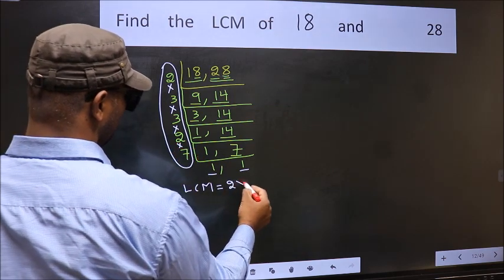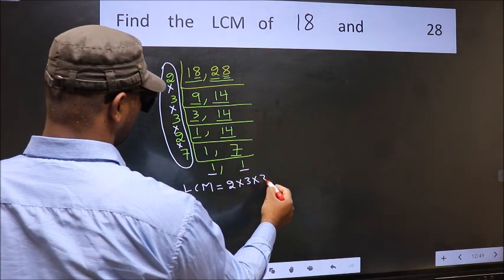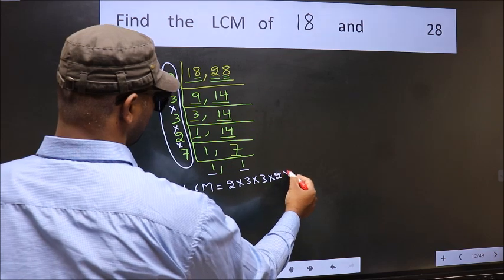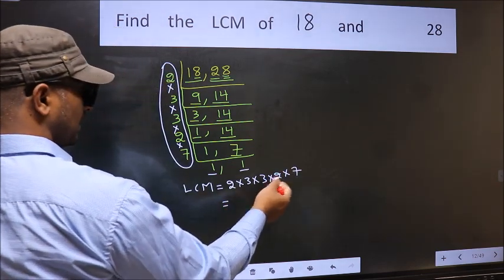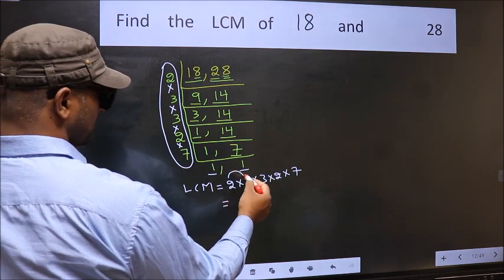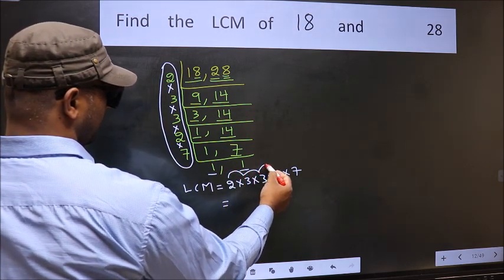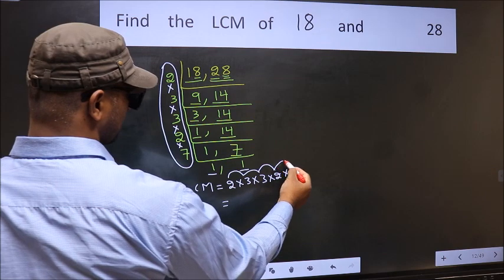That is 2 into 3 into 3 into 2 into 7. So let us multiply these numbers. 2 into 3, 6 into 3, 18 into 2, 36 into 7.